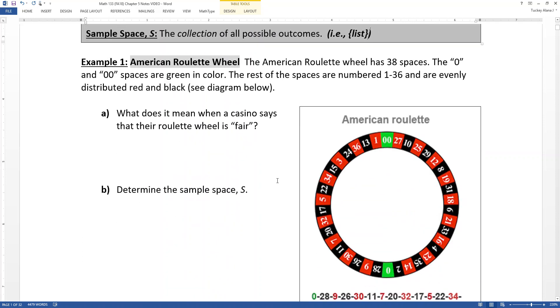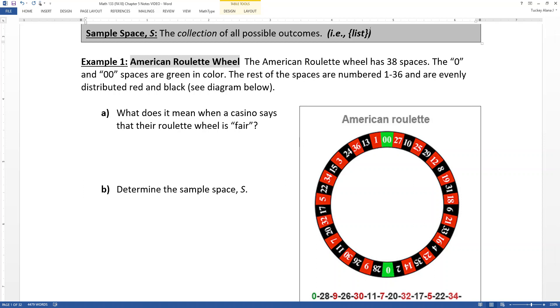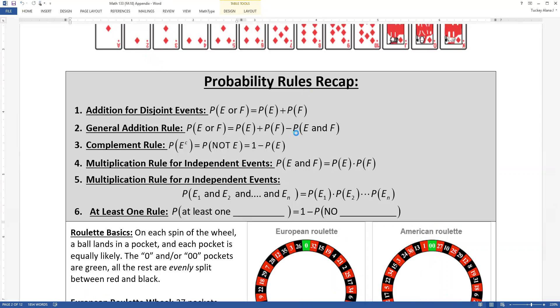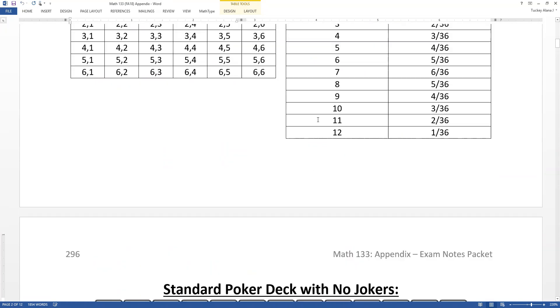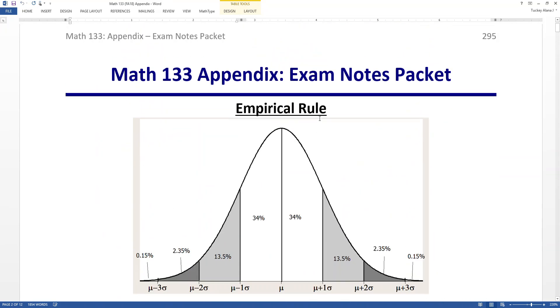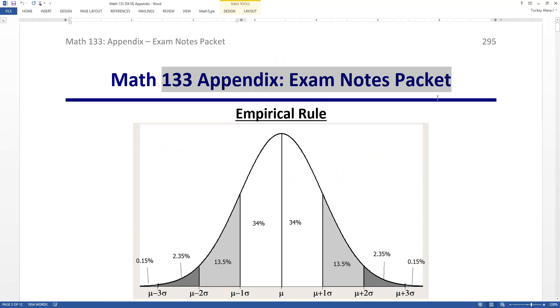All right. So let's look at an example here. We have the American roulette wheel. Now, the American roulette wheel is an example we're going to go back to a lot in this chapter. So it has 38 spaces. The 0 and 00 spaces are green in color. The rest of the spaces are numbered 1 through 36 and are evenly distributed red and black. Now, if you're thinking, geez, do I have to put that on my note sheet? No, you do not, because I actually give it to you in your appendix note sheet.